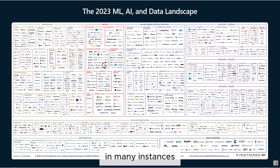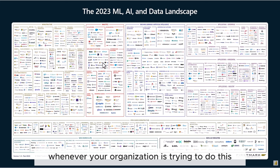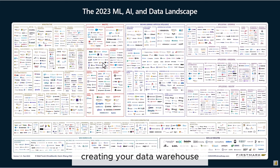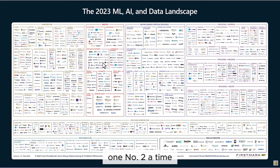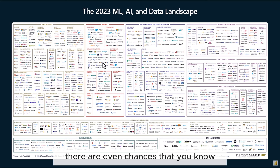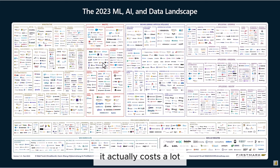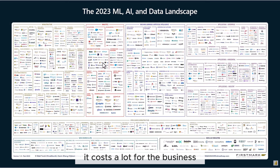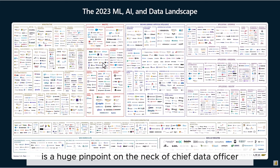This is able to create services in silos in many instances, because many times they are all not on the same platform. There are different services, and you need a project to execute this. Whenever your organization is trying to do this — creating your data lake, your data warehouse, analytics workloads and all those things — you use different services. It has to be a project which will incur cost, it takes longer time, and there are even chances that it could be a burden or not well done. It actually costs a lot beyond the explicit cost, and many of those projects actually fail.